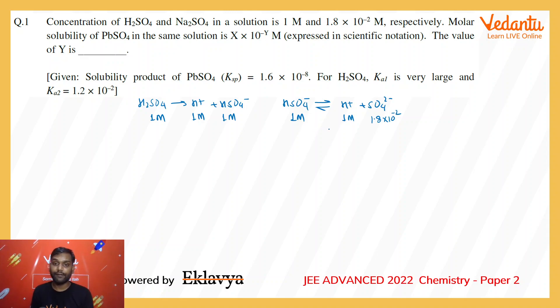Now whether this system is already at equilibrium or it will attain equilibrium, I'll have to check by comparing Qc and Kc value. The Kc value for this equilibrium is given as 1.2 × 10^-2.